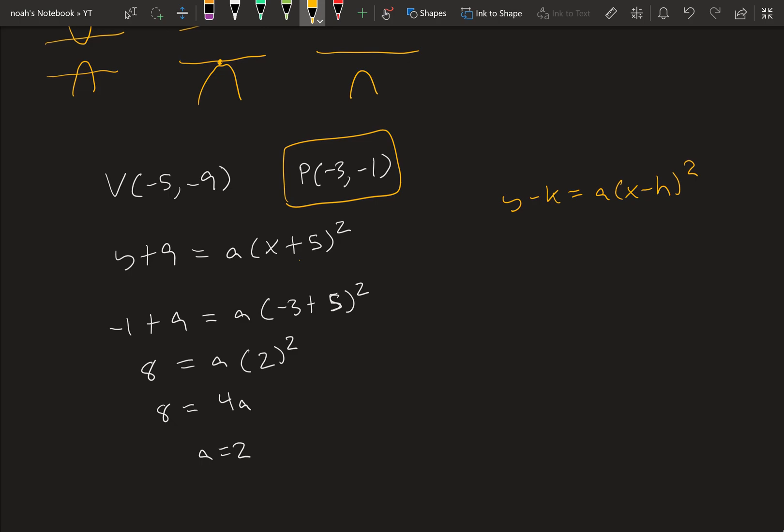Therefore, the final equation would be y plus 9 is equal to 2 times x plus 5 squared.